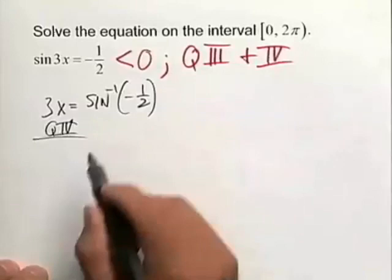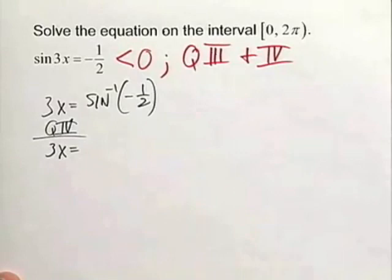We're going to start in quadrant 4 because that's probably what your calculator told you. In quadrant 4, the inverse sine of negative 1 half is going to give you a value of 11 pi over 6. And note that that is equal to 3x.